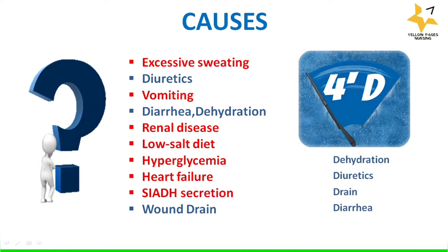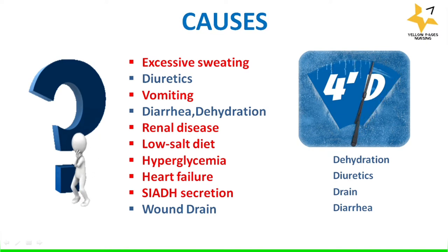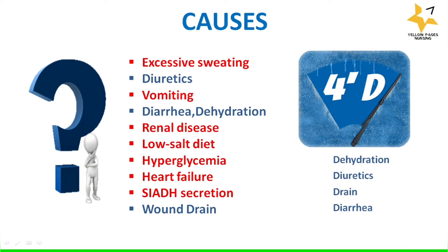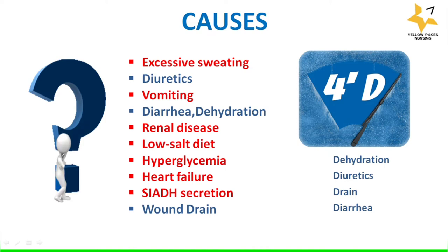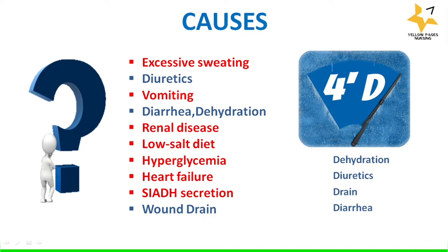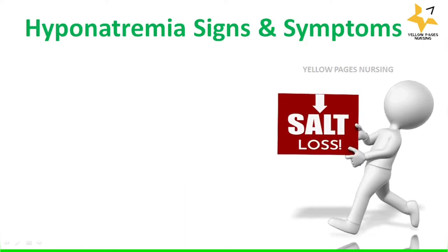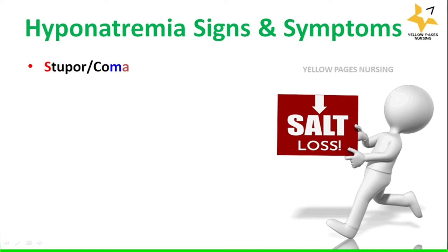The next cause is SIADH secretion. SIADH stands for Syndrome of Inappropriate Antidiuretic Hormone Secretion. It is characterized by excessive, unsuppressible release of antidiuretic hormone either from the posterior part of the pituitary gland or from an abnormal non-pituitary source. Hyponatremia can also be caused by wound drainage.